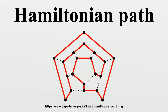Line graphs may have other Hamiltonian cycles that do not correspond to Euler tours, and in particular the line graph L of every Hamiltonian graph G is itself Hamiltonian, regardless of whether the graph G is Eulerian. A tournament is Hamiltonian if and only if it is strongly connected. The number of different Hamiltonian cycles in a complete undirected graph on n vertices and in a complete directed graph on n vertices assumes that cycles that are the same apart from their starting point are not counted separately.